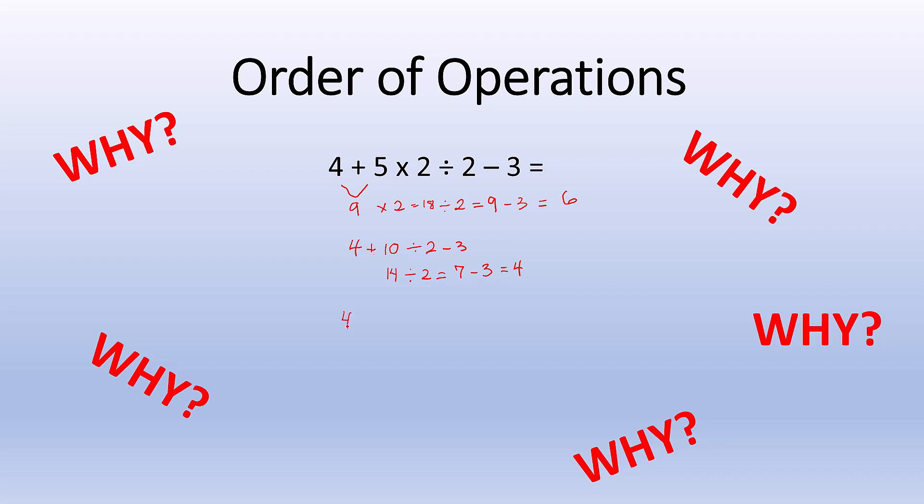If I do it that way, then I have 4 plus 5 times, 2 divided by 2 would give me 1, and then I have minus 3. I have 9, 9 times 1 equals 9, and then 9 minus 3 equals 6.